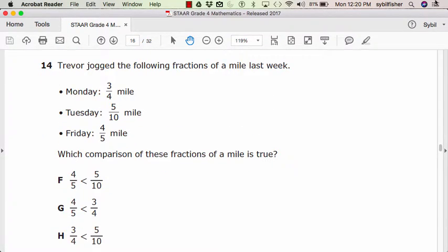Number fourteen. Trevor jogged the following fractions of a mile last week. Monday, three-fourths mile. Tuesday, five-tenth mile. Friday, four-fifths mile. Which comparisons of these fractions of a mile is true?